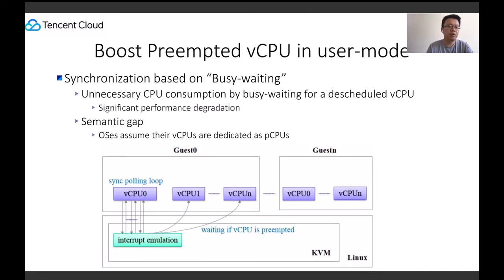Synchronization operations in the kernel are based on busy waiting. However, unnecessary CPU consumption by busy waiting for a scheduled vCPU will significantly decrease performance. For example, TLB shutdown — remote TLB flush does a busy wait, which is fine in a bare-metal scenario. But within the guest, the vCPU might have been preempted or blocked.